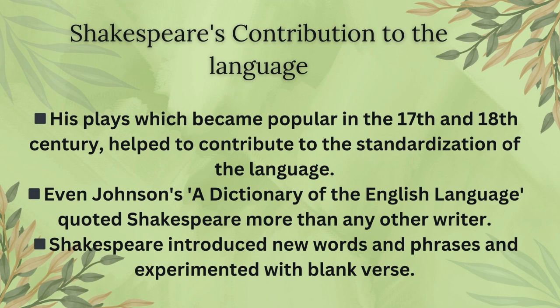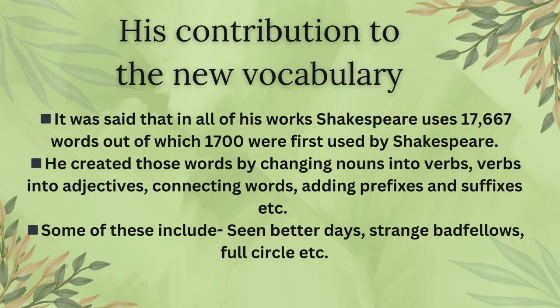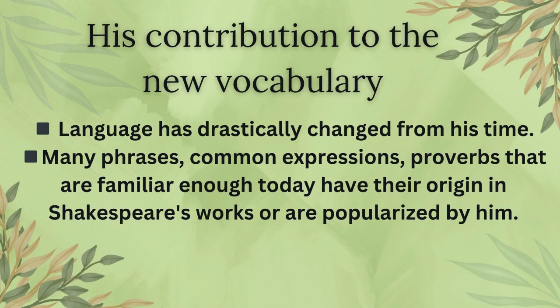Shakespeare introduced new words and phrases and experimented with blank verse. In all of his work, Shakespeare uses 17,667 words, out of which 1,700 were first used by him — meaning he created those words. He did this by changing nouns into verbs, verbs into adjectives, connecting words, and adding prefixes and suffixes. Some examples include phrases like 'seen better days,' 'strange bedfellows,' and 'full circle.'